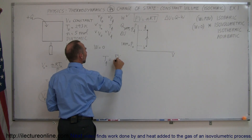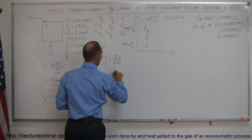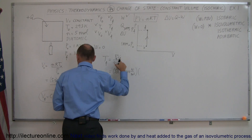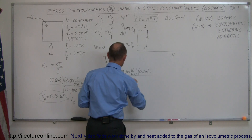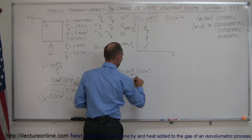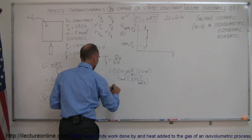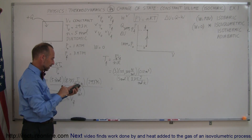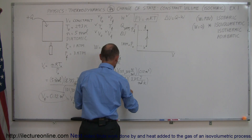For the final temperature, we use the final pressure of 3 atmospheres — 3 × 101,300 newtons per square meter — and the final volume of 0.12 cubic meters, divided by 5 moles and R = 8.315 joules per mole·Kelvin. Calculating: 0.12 × 101,300 × 3 ÷ 5 ÷ 8.315 gives a final temperature of 879 Kelvin.